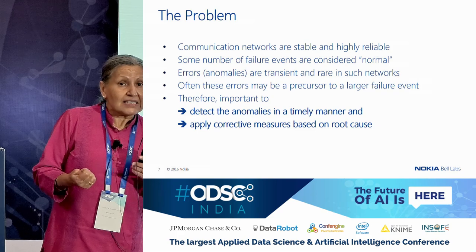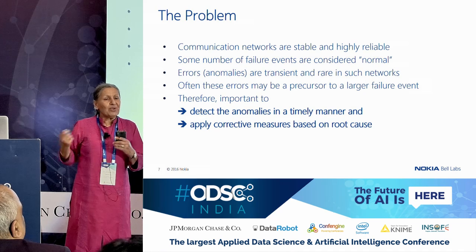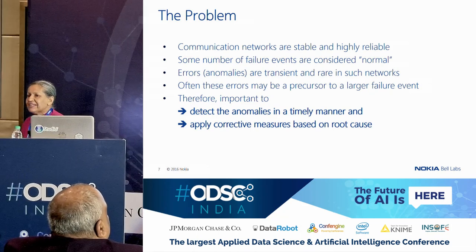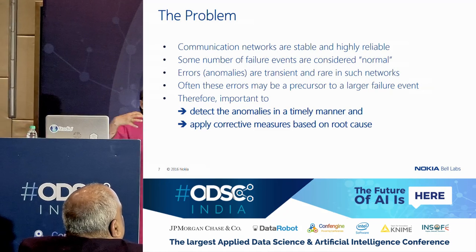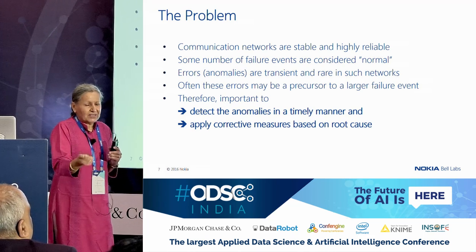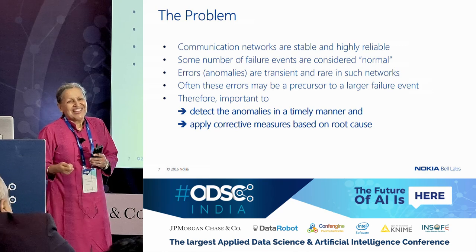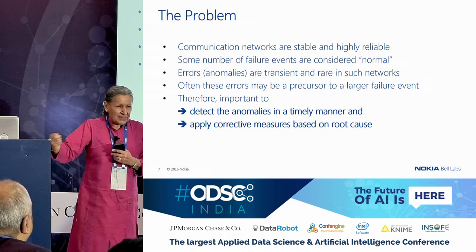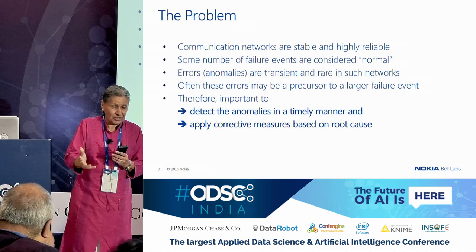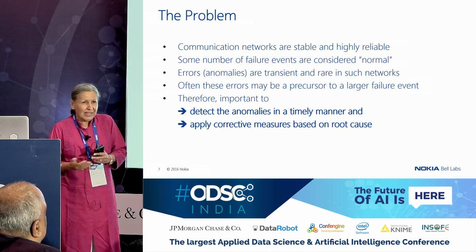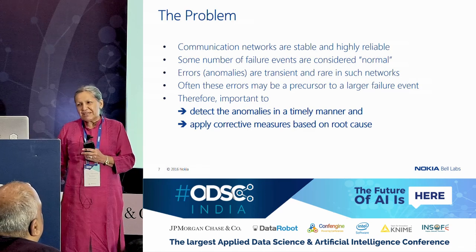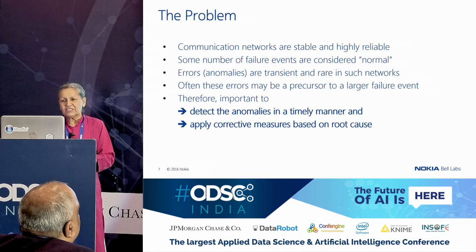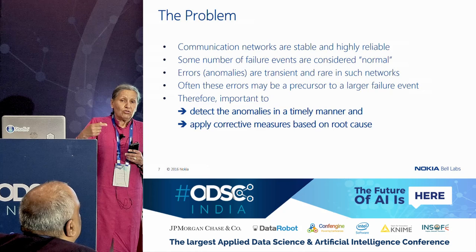These networks are very reliable, so there aren't many failure events, which is good — but to build a model we don't have a lot of failure data. Some small failure events are considered normal: in a large telecom network, if one call gets dropped we're not going to do much about it because you'll redial. But if nobody in this hotel could make a call, then it gets serious. So anomalies are rare, and the idea is that small problems could be a precursor to a bigger event.